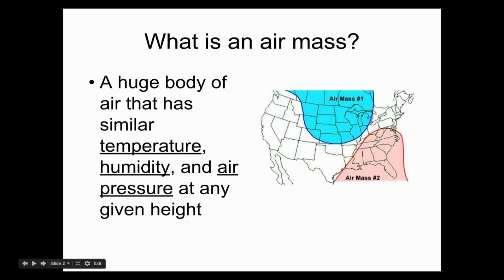Air masses are huge bodies of air that have similar temperature, humidity, and air pressure at any given height. If you have a certain type of weather taking place outside, that's because there's a specific air mass that's influencing your weather.